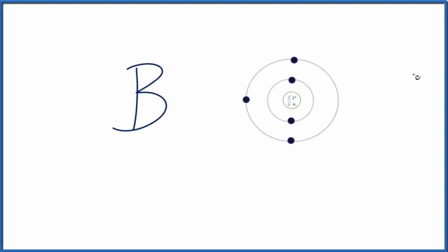In this video we'll write the Lewis structure for B3+, the boron ion. But before we do that, let's write the Lewis structure just for boron, regular boron as it's found on the periodic table.